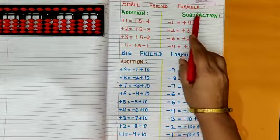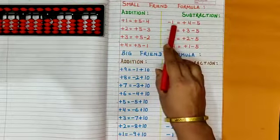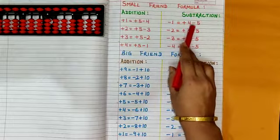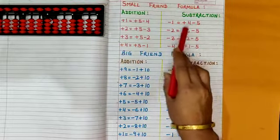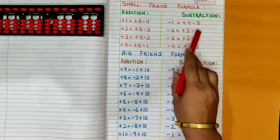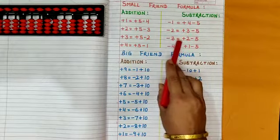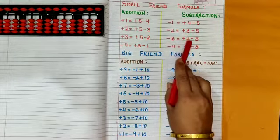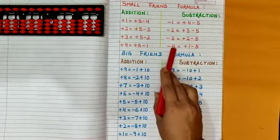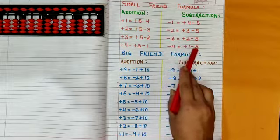Small friend formula for subtraction: minus 1 is equal to plus 4 minus 5, minus 2 is equal to plus 3 minus 5, minus 3 is equal to plus 2 minus 5, minus 4 is equal to plus 1 minus 5.